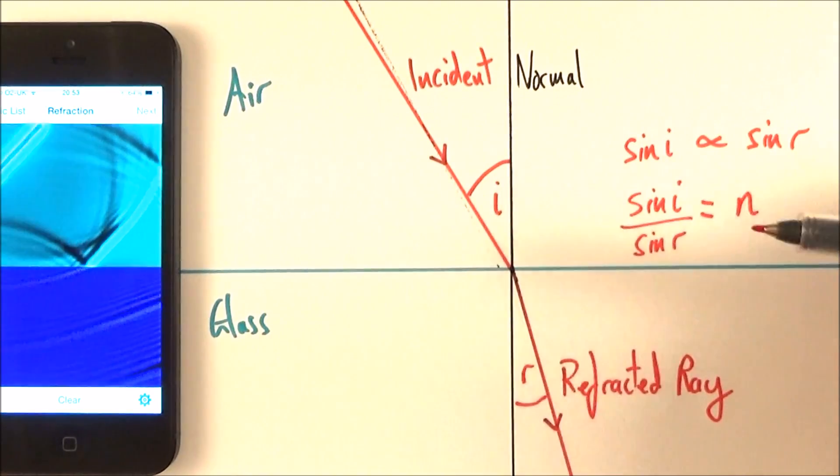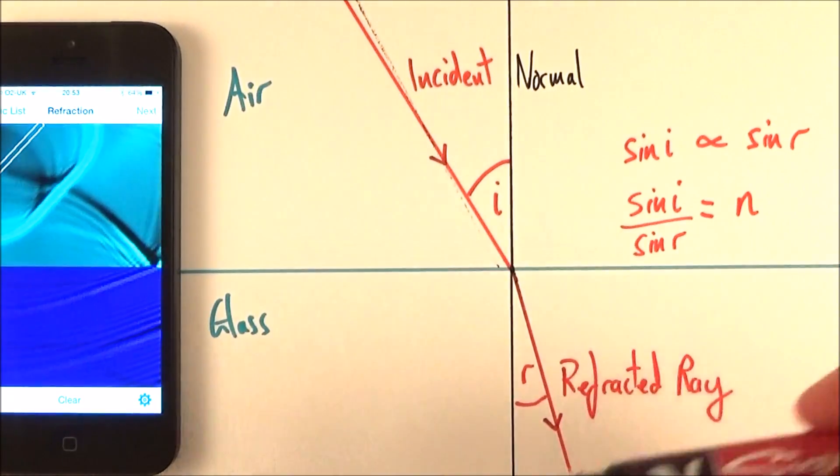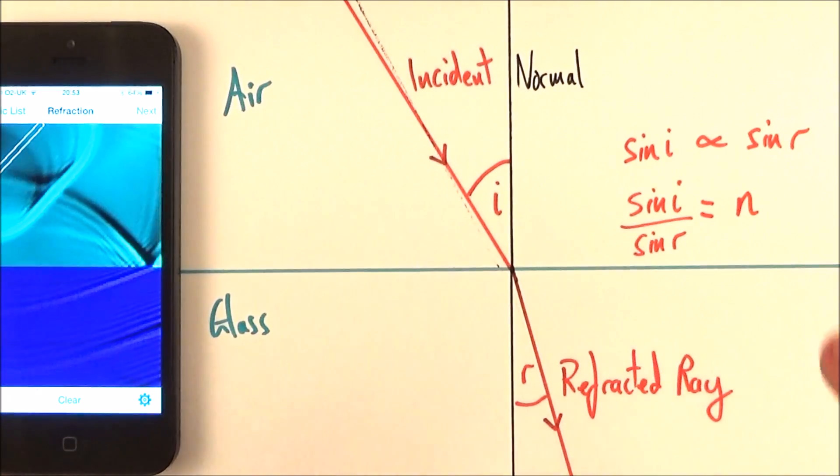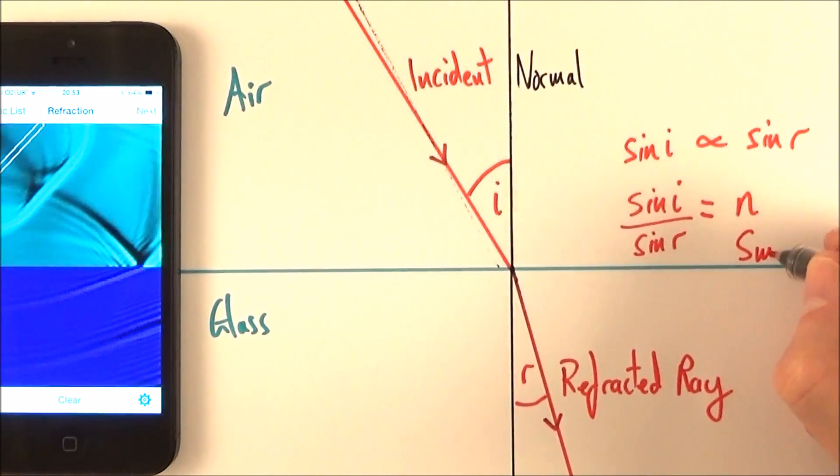And you might have a refractive index between air and glass, there might be another one for glass to air, or air to a vacuum, or glass to perspex, or whatever it may be. And this thing here, this relationship here, is what we call Snell's law.